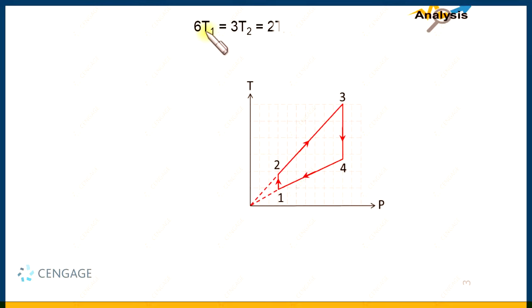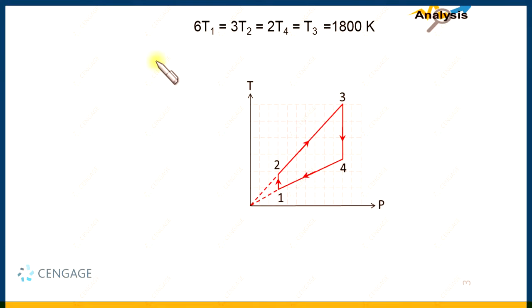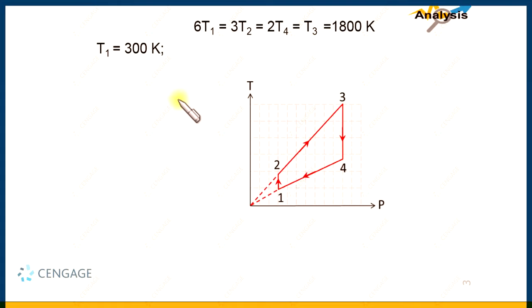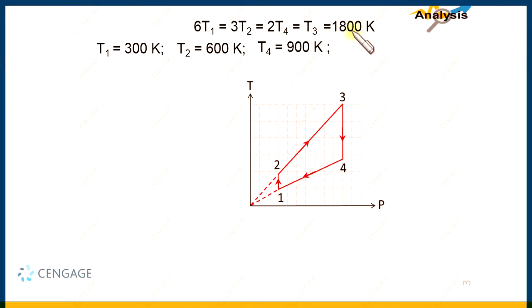This is the temperature relationship. Now we can find the value of T₁ = 1800/6 = 300 Kelvin, T₂ = 1800/3 = 600 Kelvin, T₃ = 1800 Kelvin, and T₄ = 1800/2 = 900 Kelvin. And this is the T-P diagram.